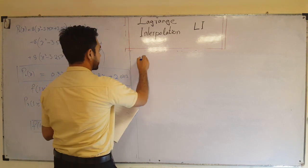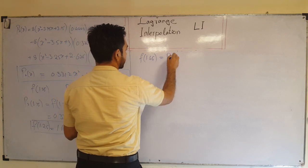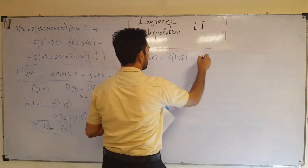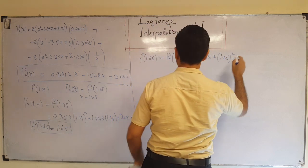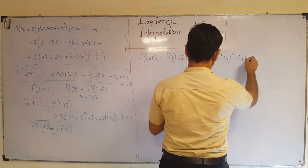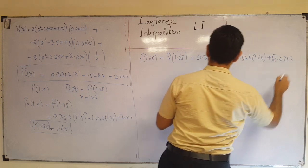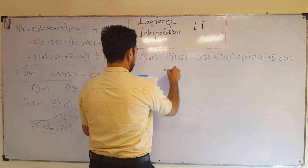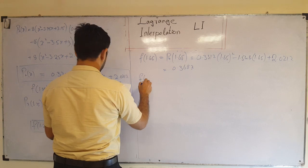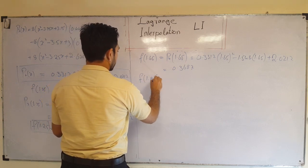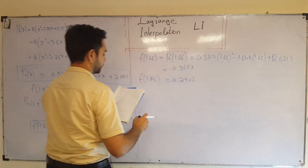Similarly, we substitute x = 1.65 into P₂(x) and that gives approximately 0.3667. For x = 1.85, substituting into P₂(x) gives us 0.2909.